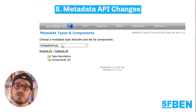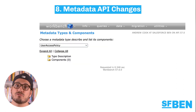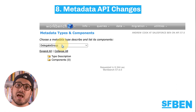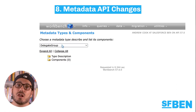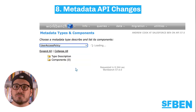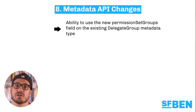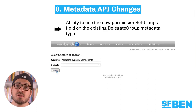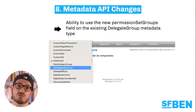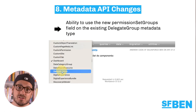There have been a number of changes to the Metadata API in this release, from the retirement of the Service Field data type metadata type to the various new analytics and customization features. My personal favorite is the ability to use the new Permission Set Groups field on the existing Delegate Group metadata type, allowing delegated admins to manage permission set group assignments.